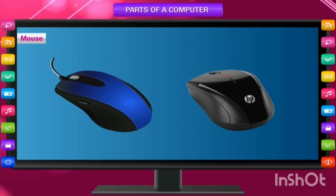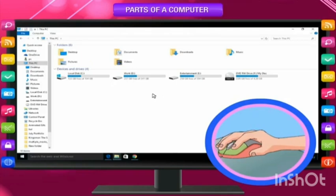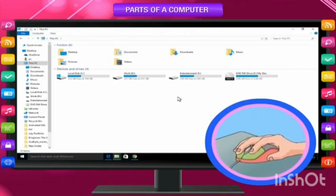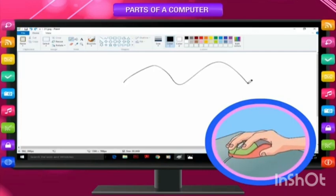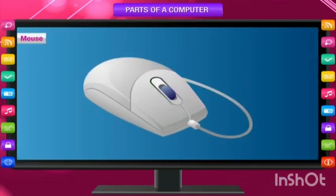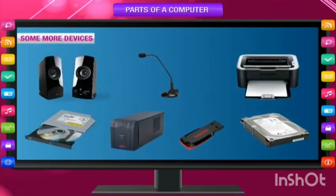A mouse is small in size and has a tail — a wire or cable — which connects it to the CPU. When you move a mouse, you can see a pointer moving on the screen. You can draw pictures on the computer with the help of a mouse. It has two or more buttons.